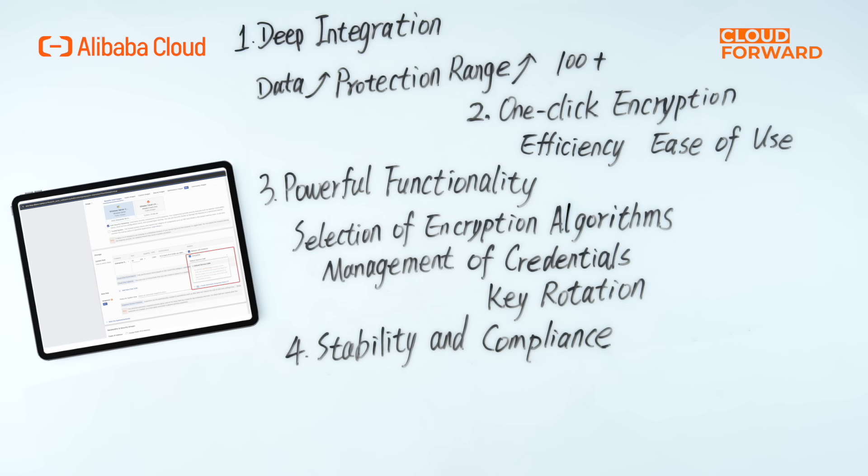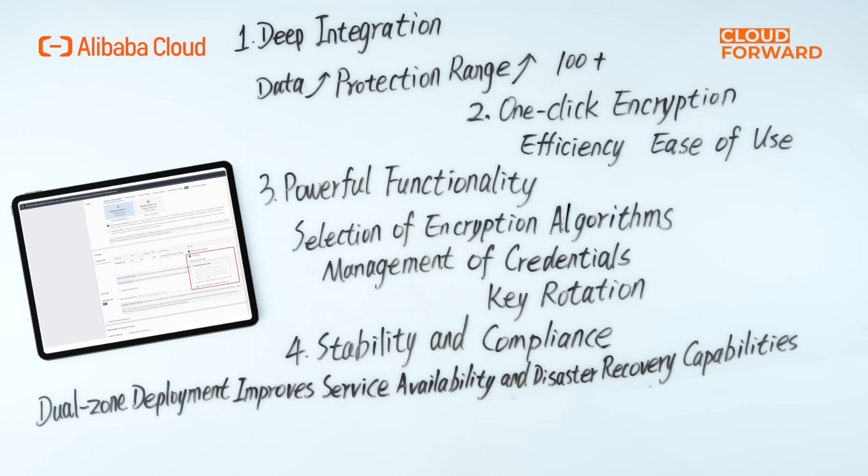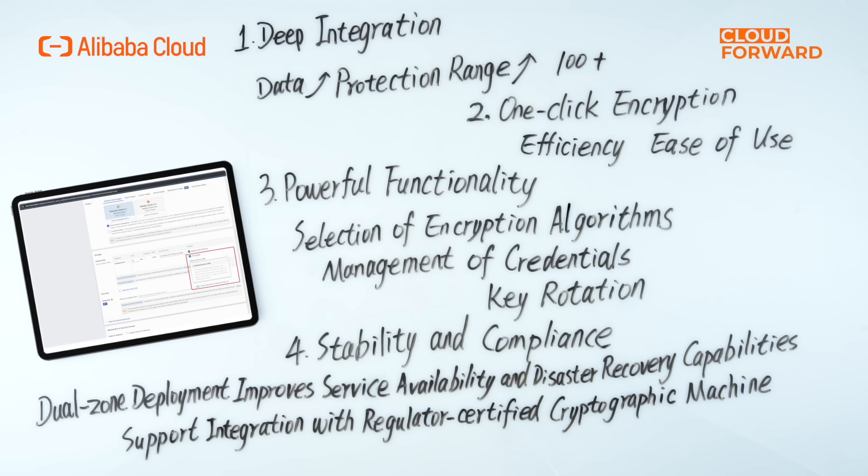Four, stability and compliance. For enterprise-level products, stability and compliance are the baselines. Alibaba Cloud KMS offers exclusive dual-zone deployment, improved service availability and disaster recovery capabilities, load balancing supporting minute-level RTO, and each instance comes with a free automatic backup function. Once enabled, it automatically backs up keys and credential data, helping you achieve high availability for your business. It also supports integration with regulator-certified cryptographic machines to meet higher-level requirements of clients.